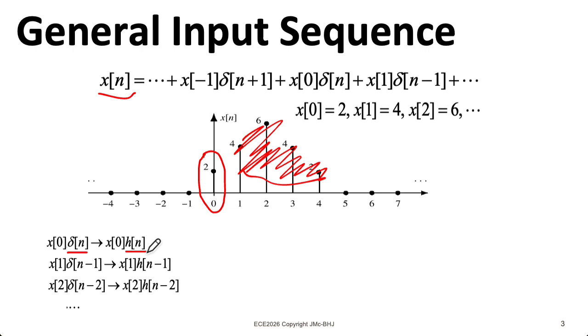By the scaling property of a linear system, we know that if we have a given input that gives us a certain output, we know that if we scale the input by some value, here x0, 2 in this example, we scale the output by x0.